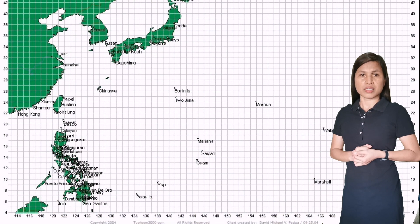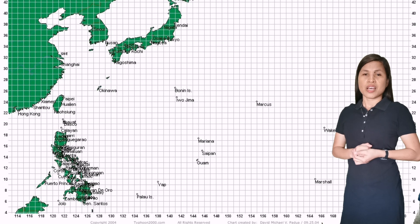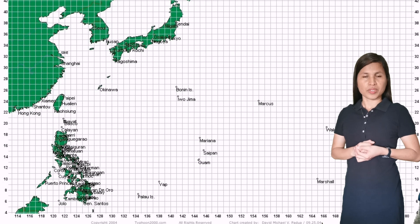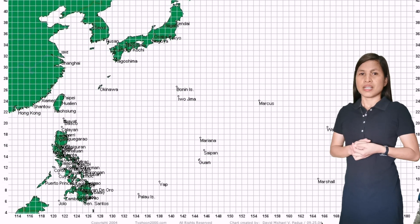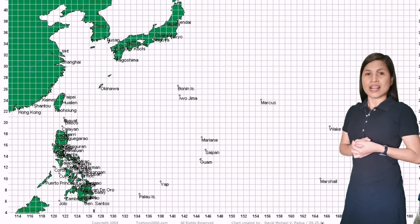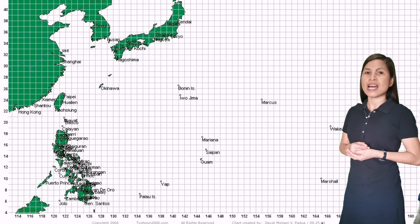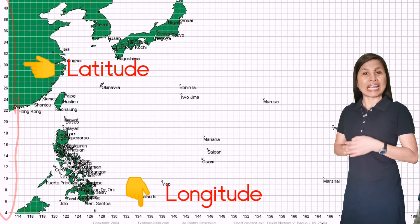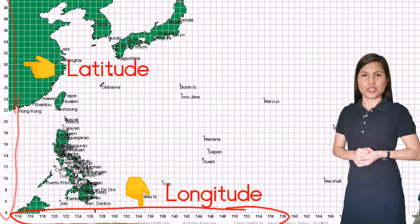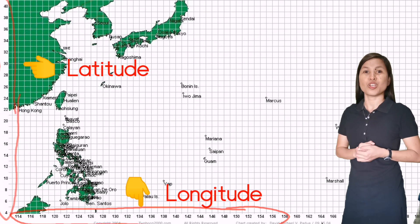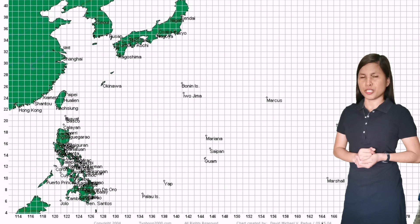First, we are going to use a tracking chart, but before that we are going to plot the given points with the values of latitude and longitude. In this map, the latitude values are located at the y-axis — those running from top to bottom. While the longitude are the values at the bottom, or the values on the x-axis, so these are the longitude values.